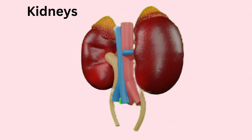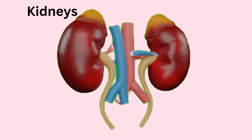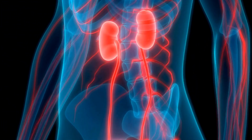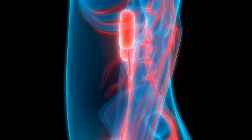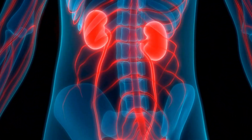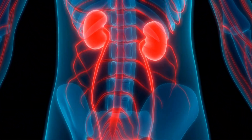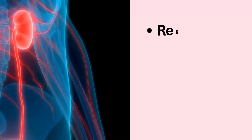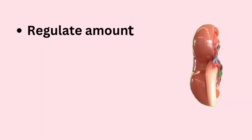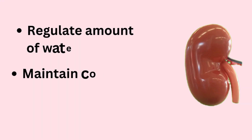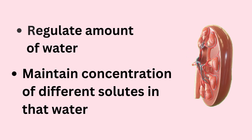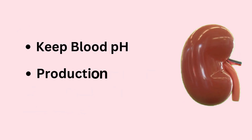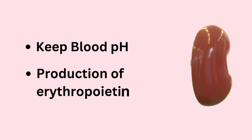The main organ in the urinary system is the kidneys. The kidneys are bean-shaped structures located on either side of your spine, just below your rib cage. They perform several tasks like regulating the amount of water and concentration of different solutes to keep blood pH, as well as the production of erythropoietin.